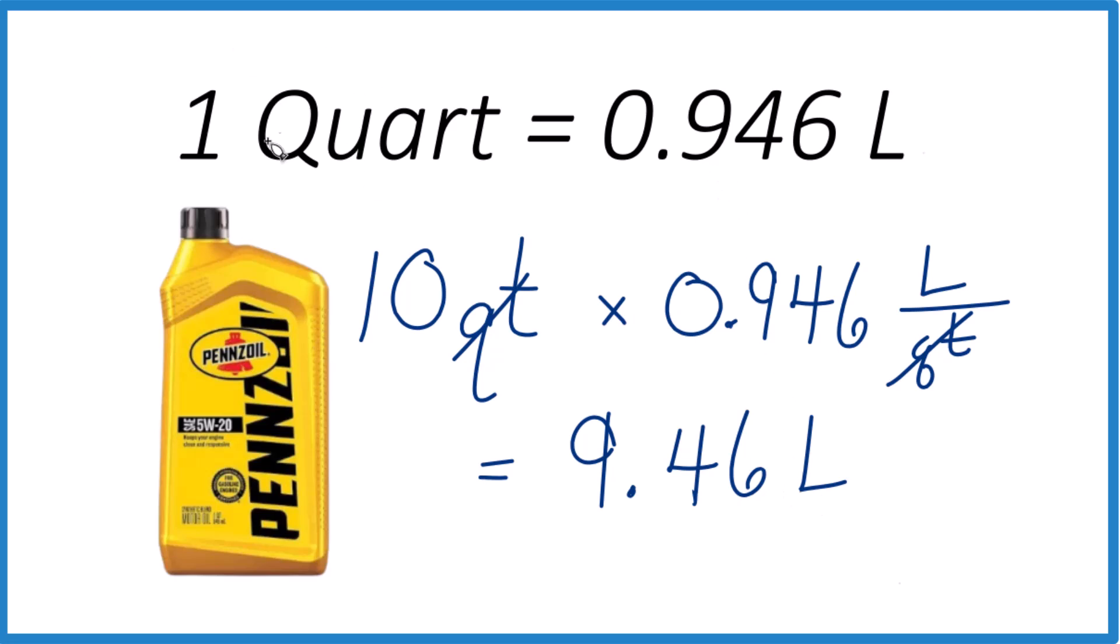So that's how you convert from quarts to liters. One quart is 0.946 liters. And you can see, as you start using more quarts, it starts becoming a bigger deal, that difference there.